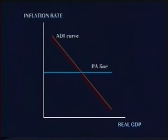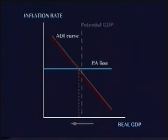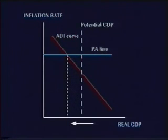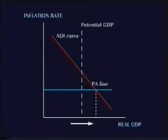The PA line is horizontal, because the same behavior occurs no matter what the level of real GDP. The PA line tells us what the level of inflation is. Thus, looking at the intersection of the PA line and the ADI curve tells us the level of real GDP at any given time.